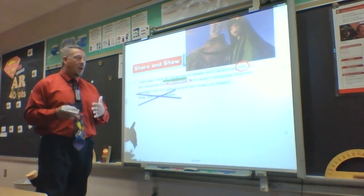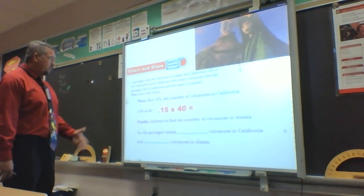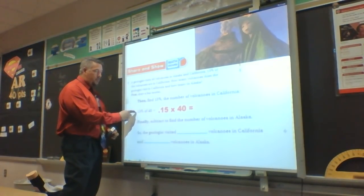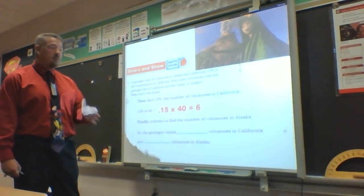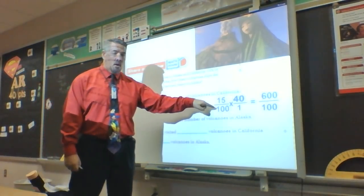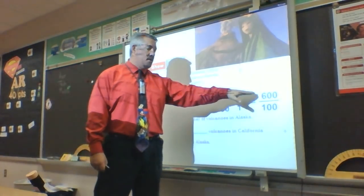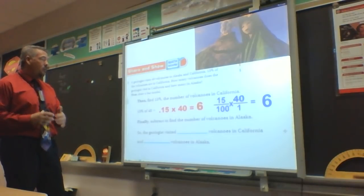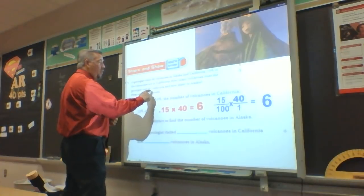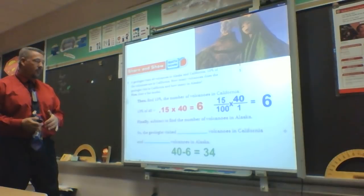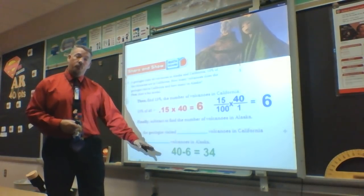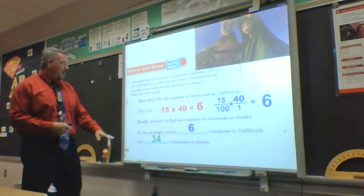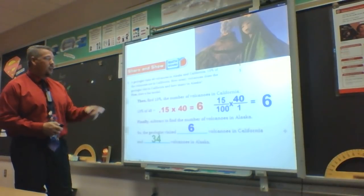So I have 15% of 40. Converting to a decimal: 0.15 times 40 gives me 6. Or using the fraction: 15 over 100 times 40 over 1 gives me 600 over 100, which reduces to 6. Either way, I have 6 volcanoes — and since 15% were in California, 6 are in California. Then 40 minus 6 gives me 34. So 6 volcanoes are in California and 34 are in Alaska.